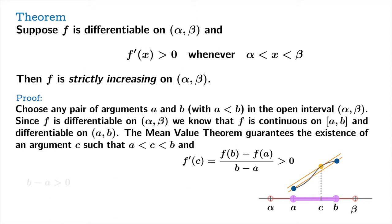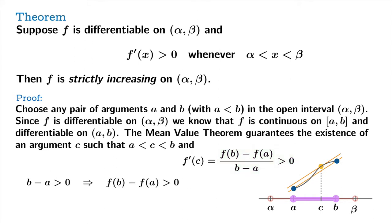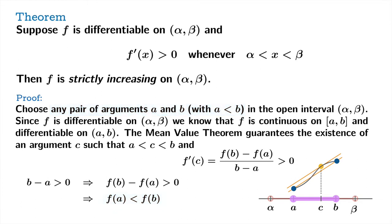So let's square away the algebra and prove it rigorously. Obviously b minus a is positive. And because this quotient is positive and the denominator is positive, it means that the numerator has to be positive. But f of b minus f of a being greater than zero is the same as saying f of a is less than f of b. And that's really the heart of the proof. Because now we know that having chosen any pair of arguments where a is less than b, it follows that f of a is less than f of b. And that is precisely what we mean when we say that f is strictly increasing on that open interval.